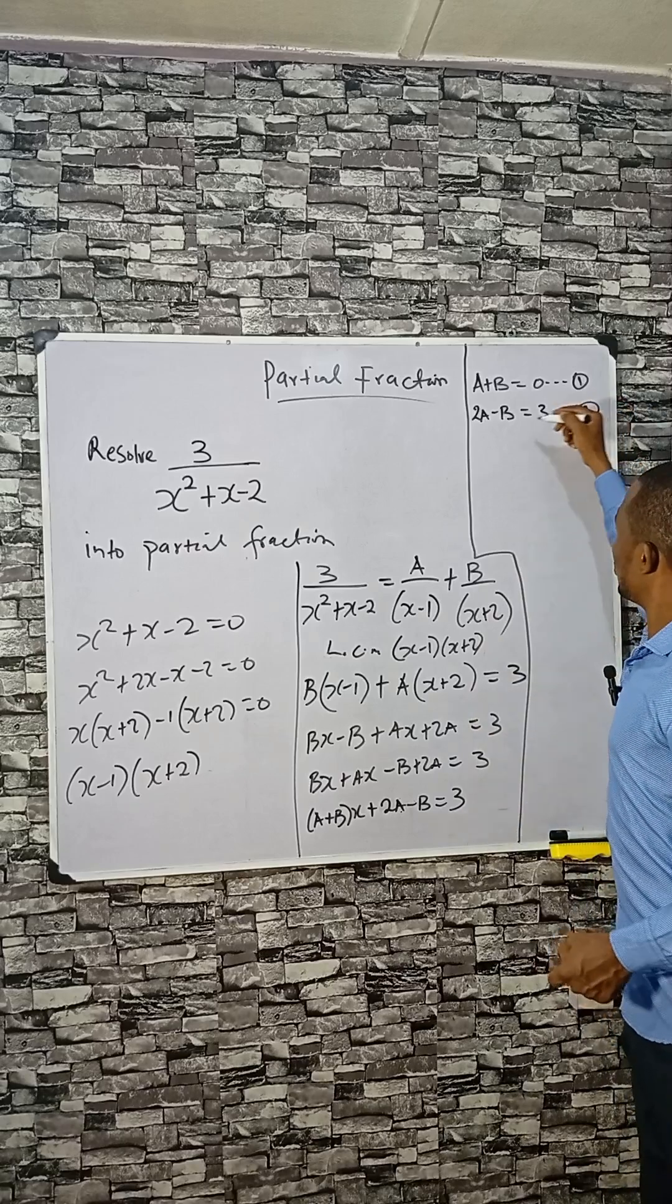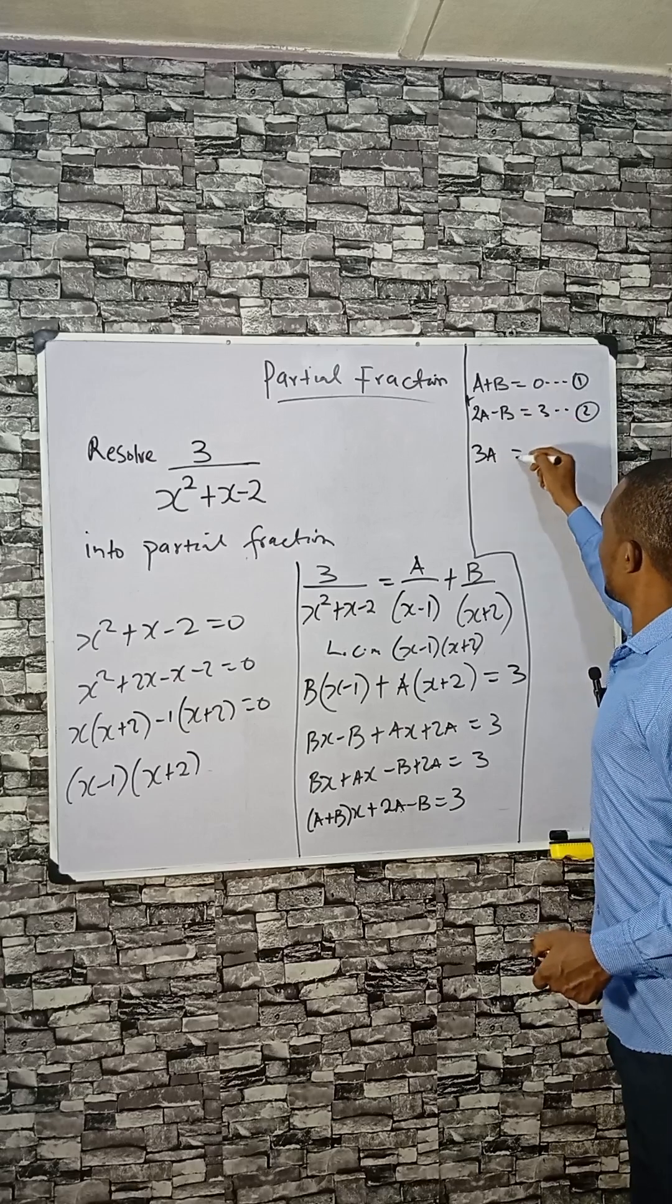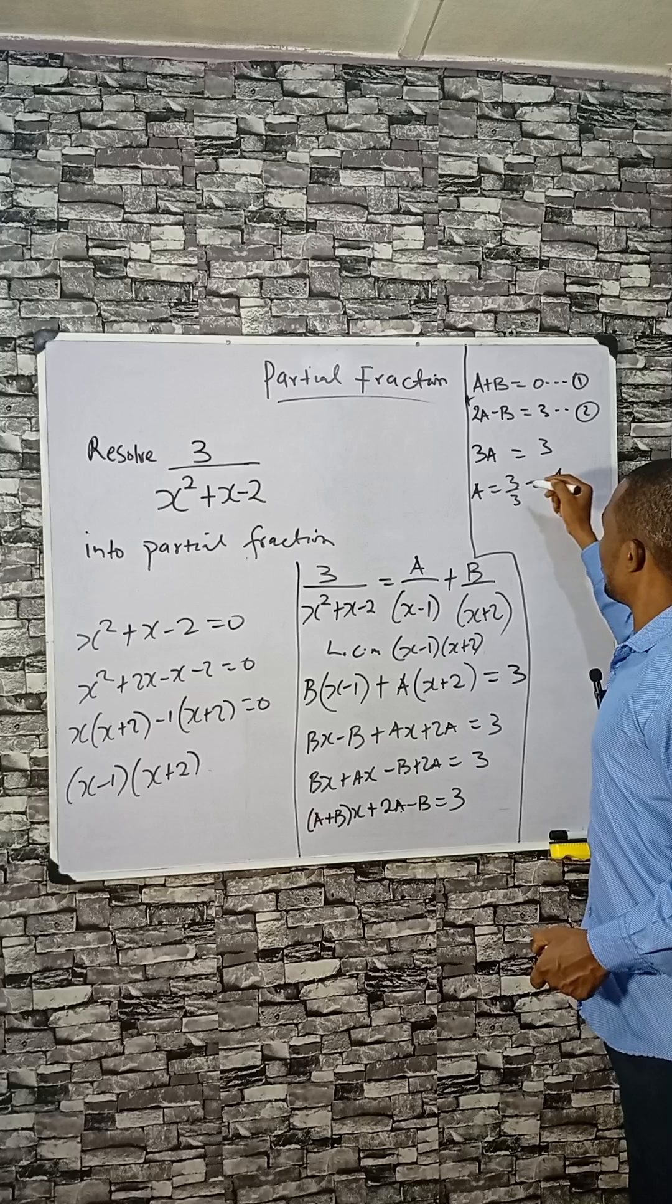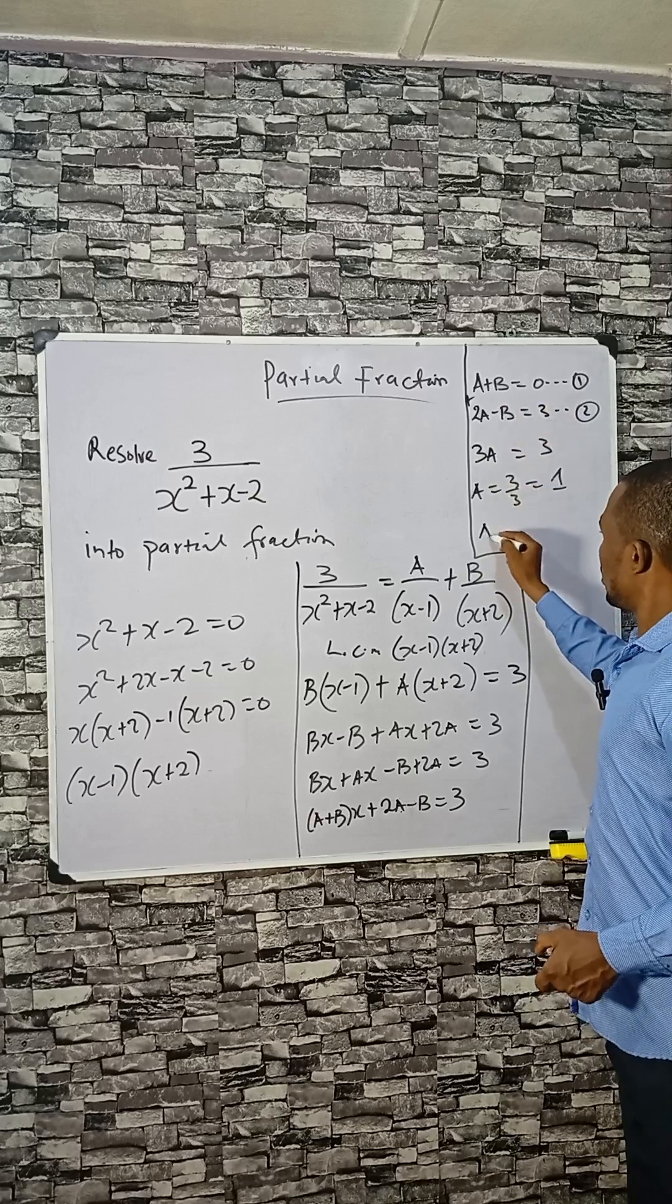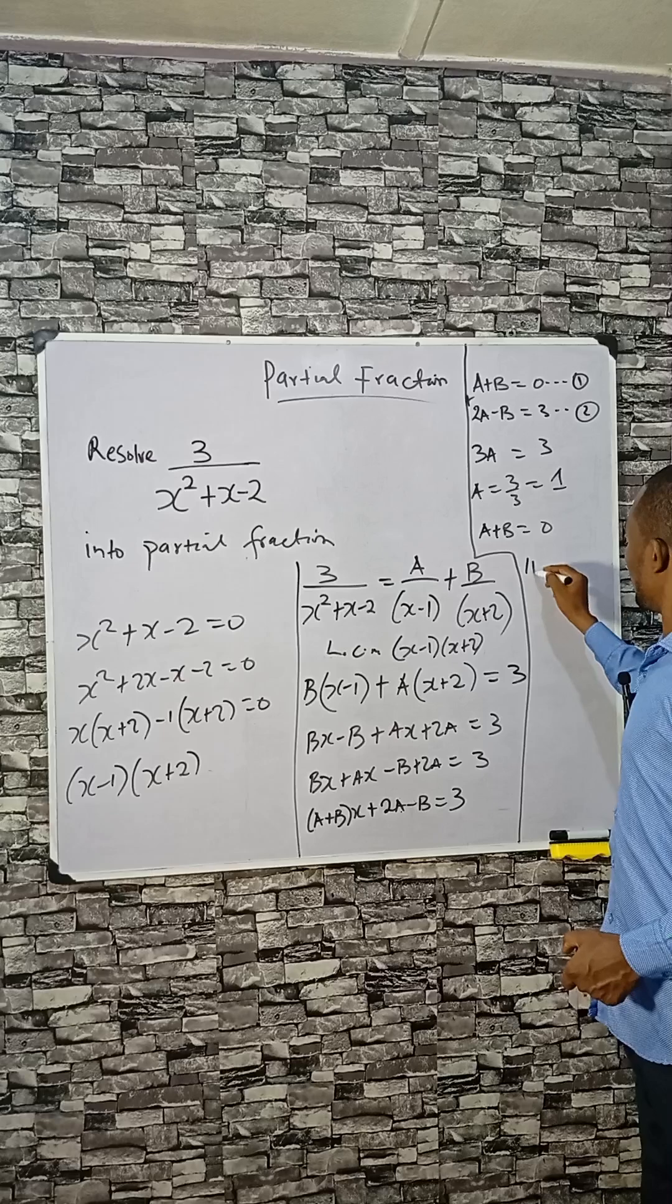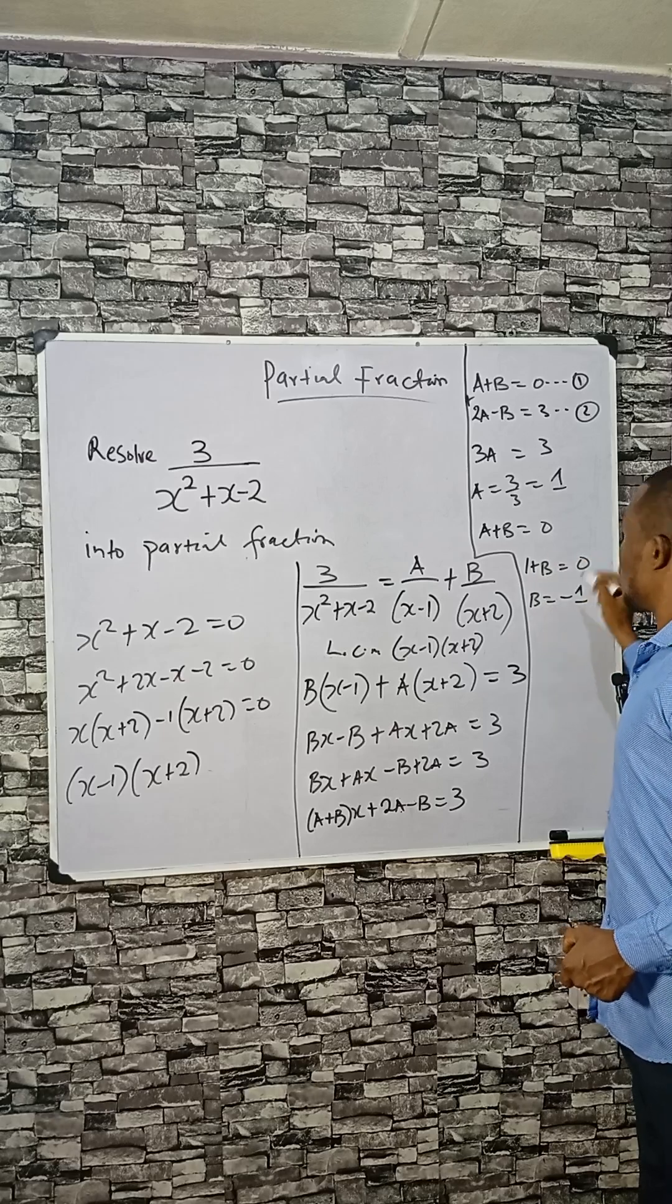By addition, A plus A is 3A, this will be 0, and this is 3, so A equals 3 divided by 3 which is 1. For B we can use any of them: A plus B equals 0, so 1 plus B equals 0, that means B equals to minus 1.